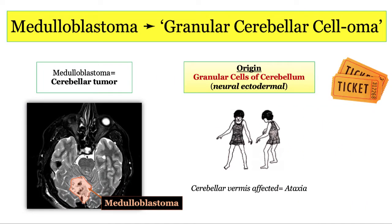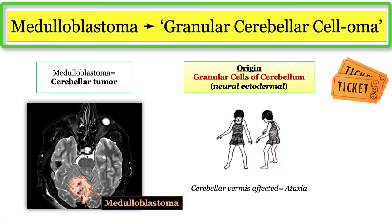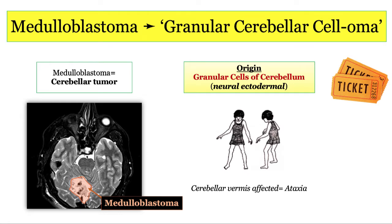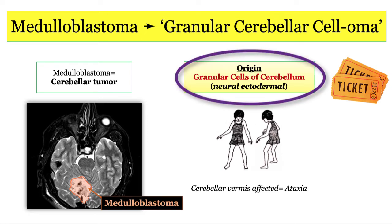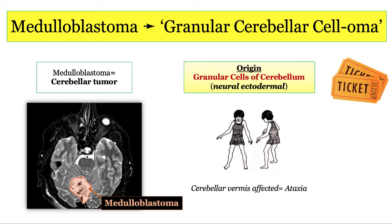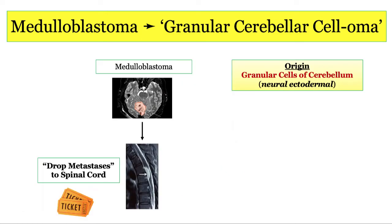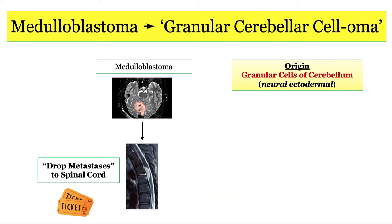Moving on to medulloblastoma — let's call this the granular cerebellar celloma. They arise from granular cells in the cerebellum and grow rapidly. The NBME will show you a cerebellar mass in a child causing obstructive hydrocephalus. Granular cells give rise to medulloblastomas, which are neural ectoderm in origin. Medulloblastomas are bad news: they grow rapidly with poor prognosis, and uniquely can metastasize outside the brain itself, sending dropped metastases down through the CSF to find a home in the spinal cord. A child with a brain tumor metastasizing to the spinal cord is board speak for medulloblastoma.